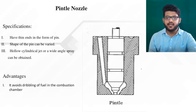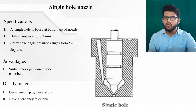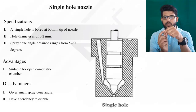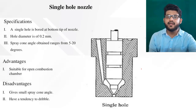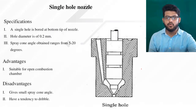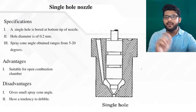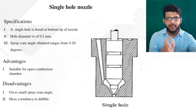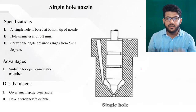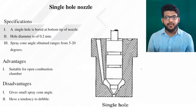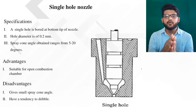Let's start with the single hole nozzle. It is called single hole because it has only one hole. The needle pin is inside that hole, and injection is done due to the lifting of that needle. The hole is located at the bottom tip of the nozzle, and its diameter is approximately 0.2 mm. When the spray comes out, it forms a cone shape inside the combustion chamber, allowing fuel to be distributed all over the chamber.